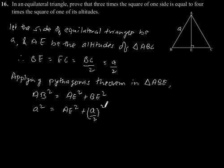This implies AE square is equal to a square minus a square by 4, which gives 3a square by 4.